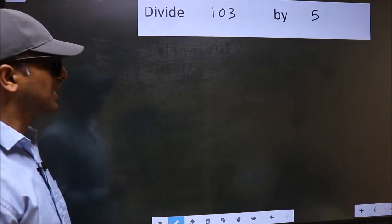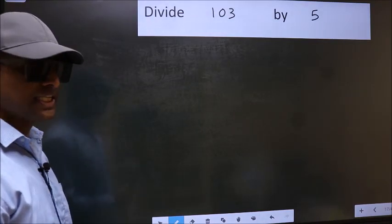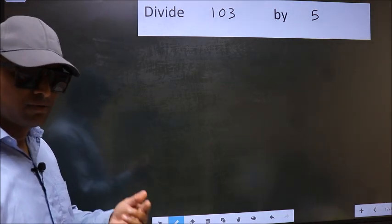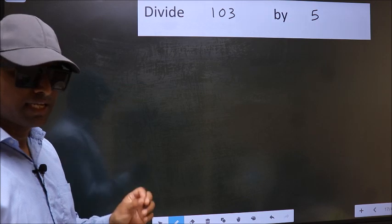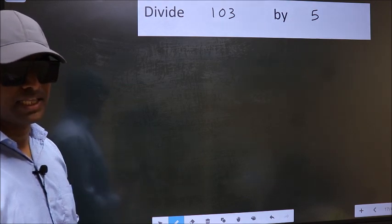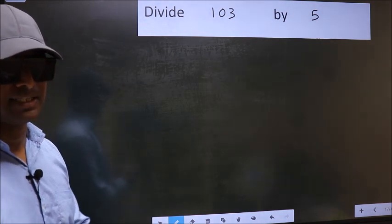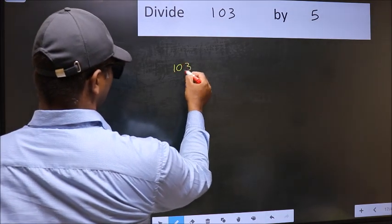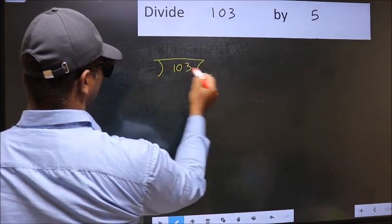Divide 103 by 5. While doing this division, many do this mistake. What is the mistake that they do? I will let you know. But before that, we should frame it in this way. 103 and 5 here.